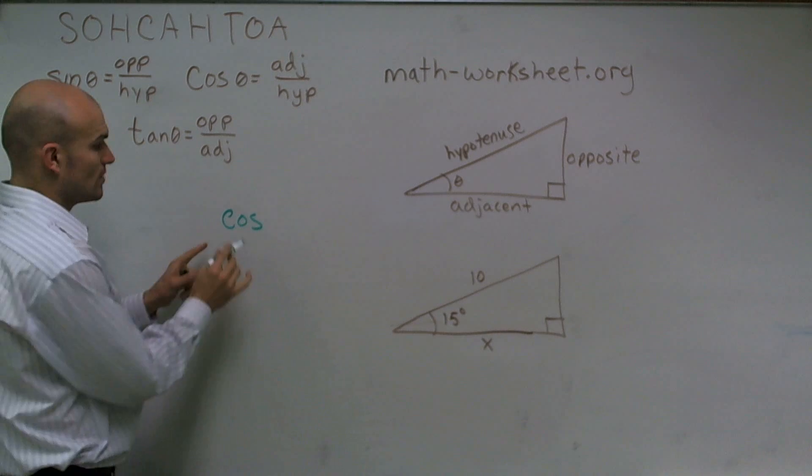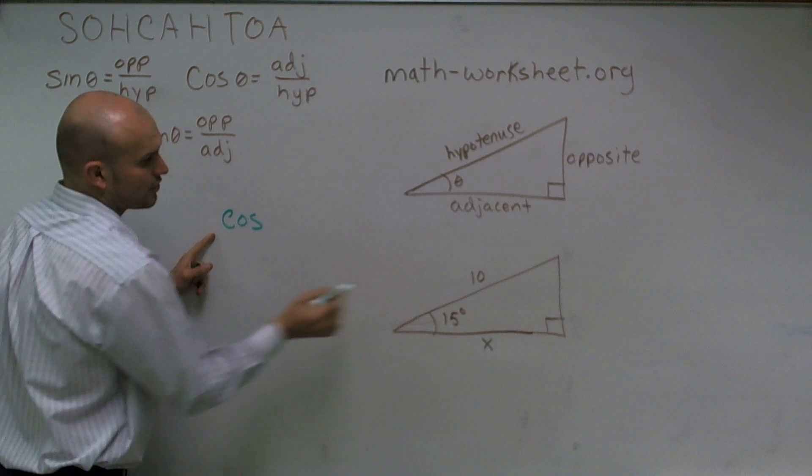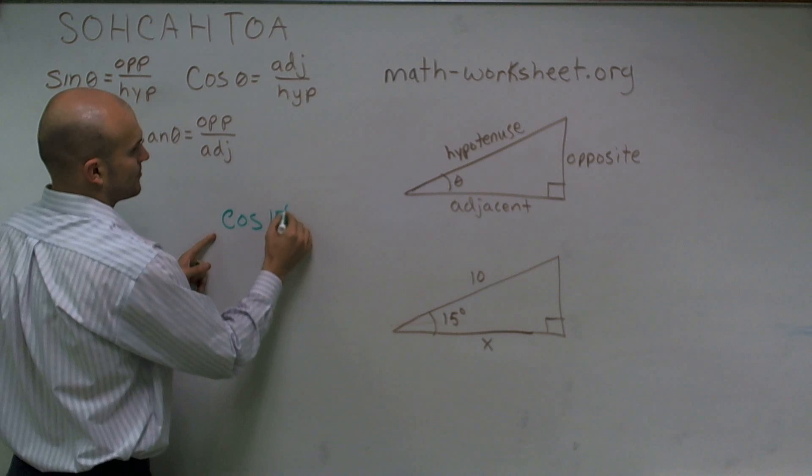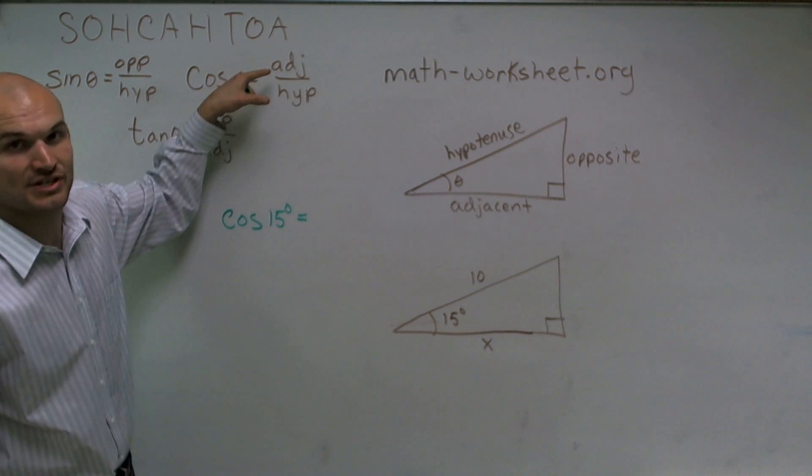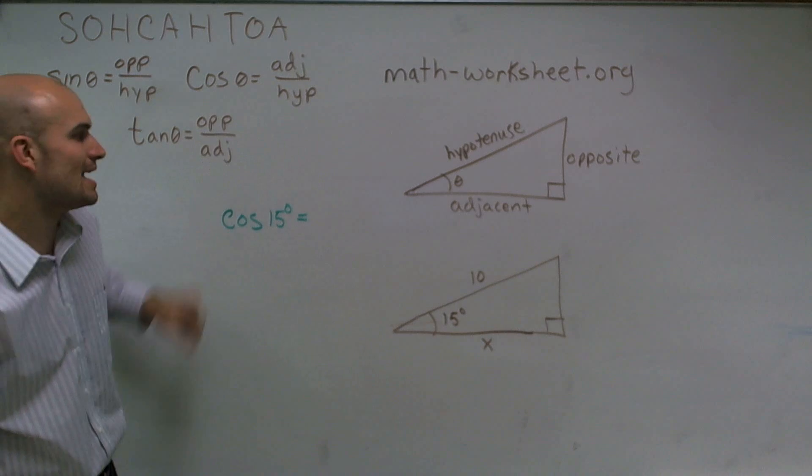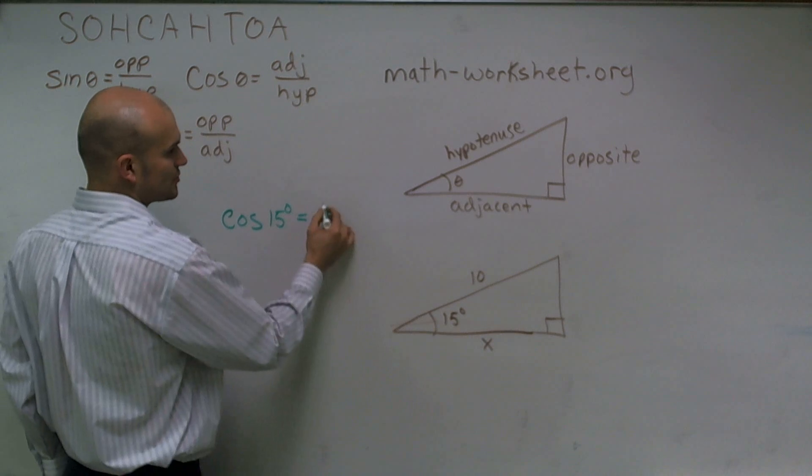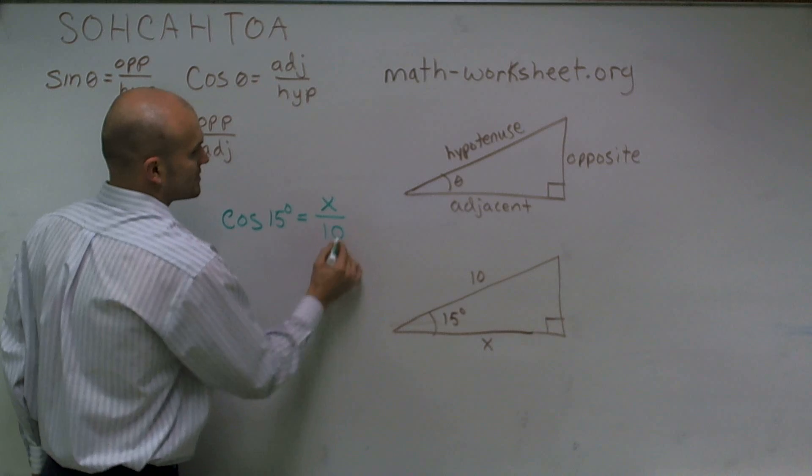So I'll write cosine of theta. I know my angle theta is 15 degrees equals the ratio of my adjacent side over my hypotenuse. So my adjacent side of this triangle is going to be x over 10.